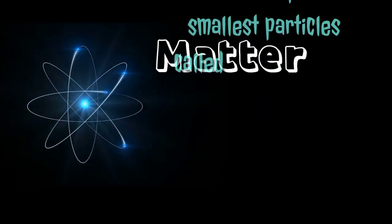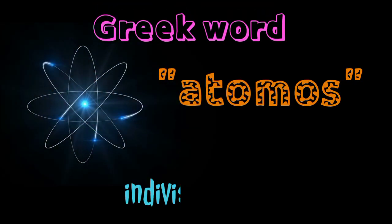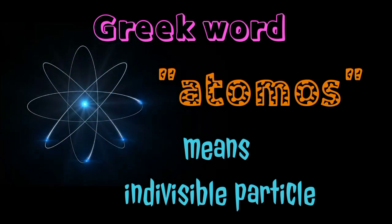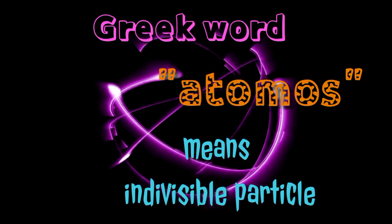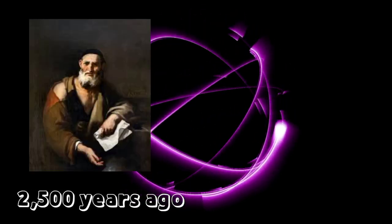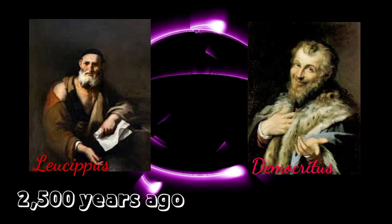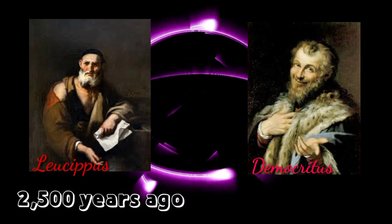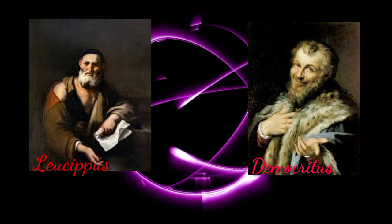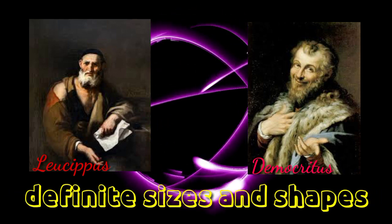Matter is made up of the smallest particles called atoms. It was derived from the Greek word atomos, which means indivisible particle. The study of matter began almost 2,500 years ago, where Leucippus and Democritus believed that nature consisted of atoms and the void that surrounds them. They believed that there are many kinds of atoms and each one has definite sizes and shapes.